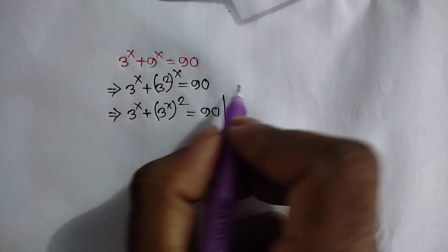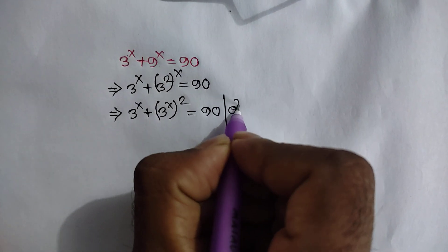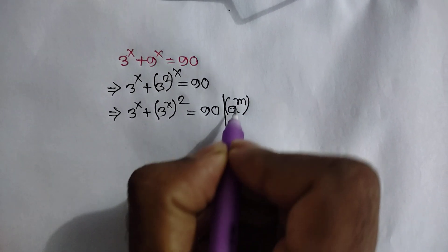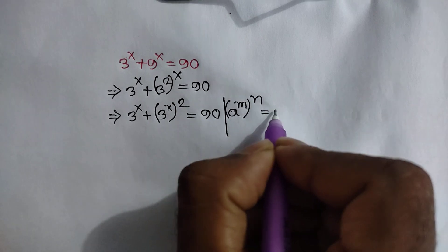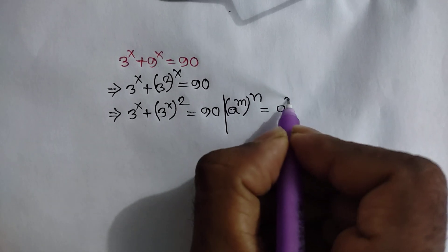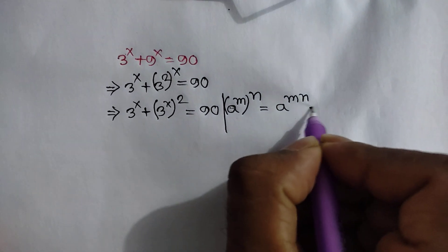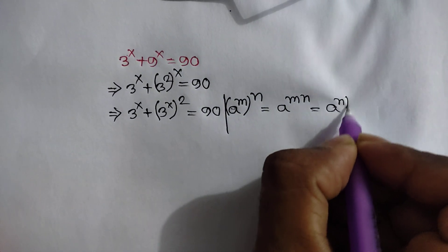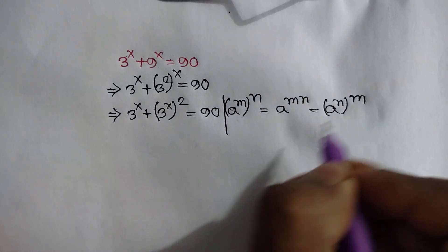According to the law: a to the power m, whole power n, is equal to a to the power m times n, which is also equal to a to the power n, whole power m.